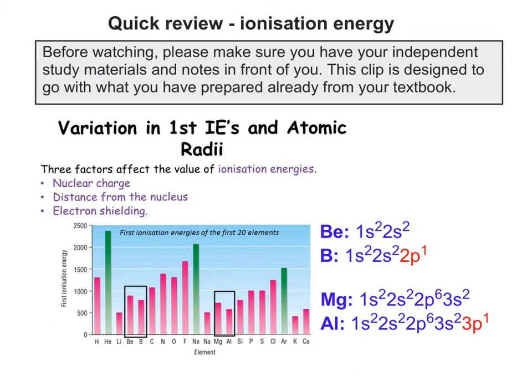Looking at the pairs beryllium and boron, and magnesium and aluminium, in each case the second element takes a dip. That's because the highlighted electron — 2p1 and 3p1 — is shielded because a new subshell is being filled.